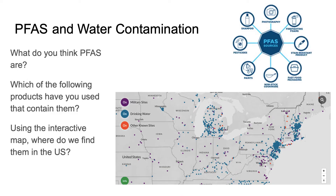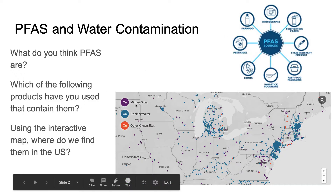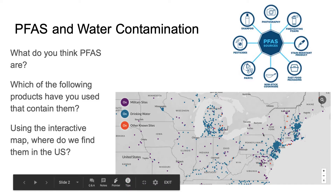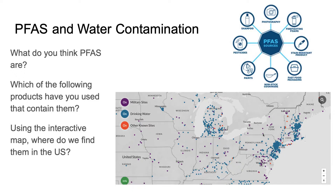To start off our module, I have some open-ended questions about PFAs. First, what do you think PFAs are? There are different sources and you can see things within them. Which of these products do you think you've used sometime in your life that contain PFAs? And then looking at this interactive map with military sites, drinking water, and other known sites — where do you think we find PFAs in water? Urban areas, rural areas, cities?